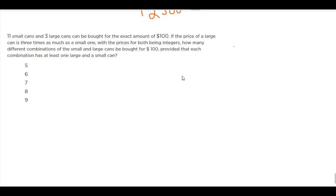Okay, there's the question. It says 11 small cans and three large cans can be bought for the exact amount of hundred dollars. I think we need to kind of stop here and see if we can make a constraint or probably come up with an equation.